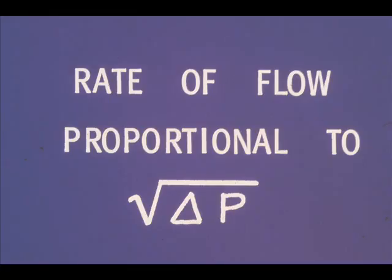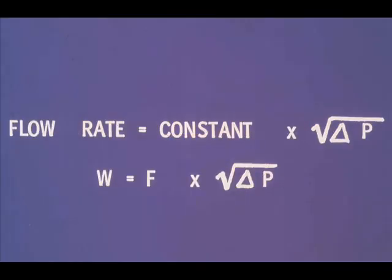We discussed pressure drop across an orifice, and that rate of flow was proportional to the square root of the pressure drop, or delta P. We talked about meter constants, and said that the flow rate for a particular orifice and meter installation could be determined by multiplying the meter constant by the square root of the delta P.